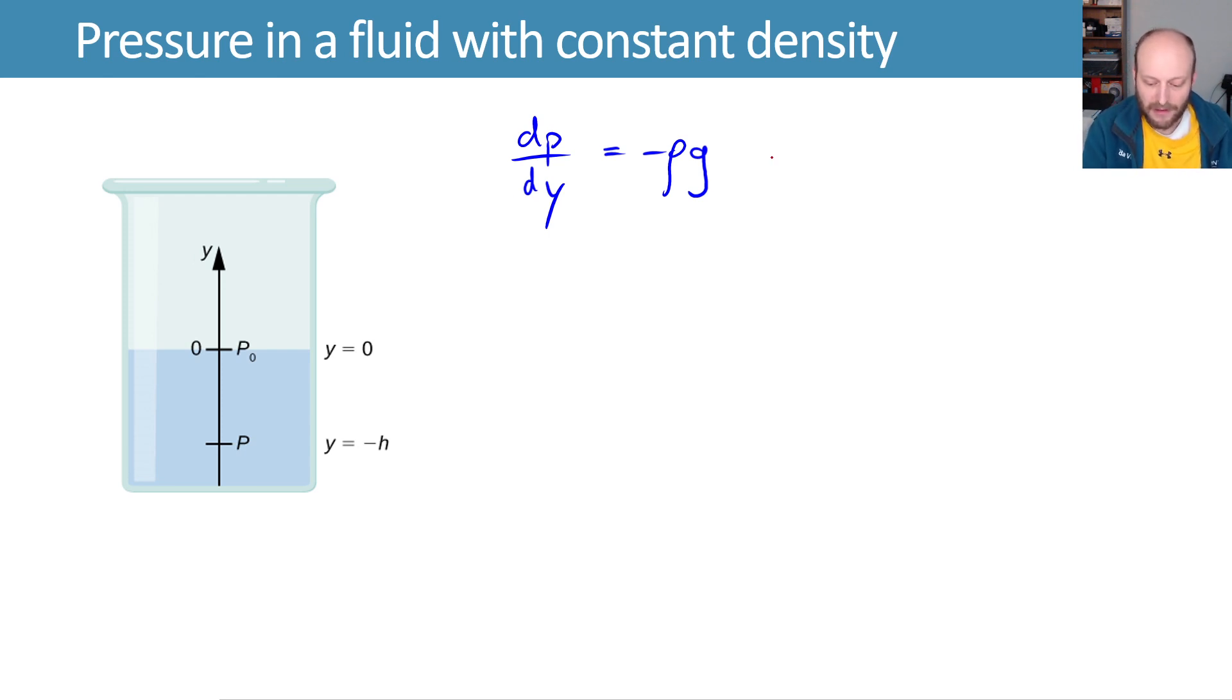We'll separate this, move the dy to the other side, and then integrate both sides to get the integral from my initial pressure of p₀ down to my final pressure of p, and that will equal the negative of the integral of ρg dy starting from my initial y position of zero down to my final position of negative h.